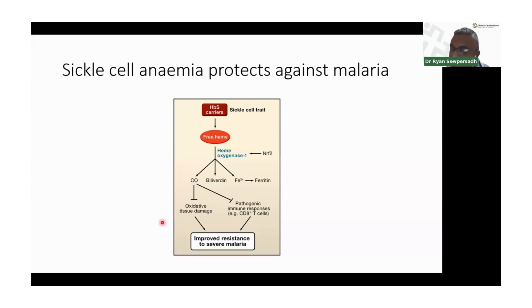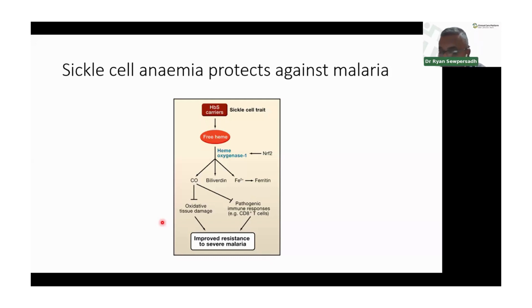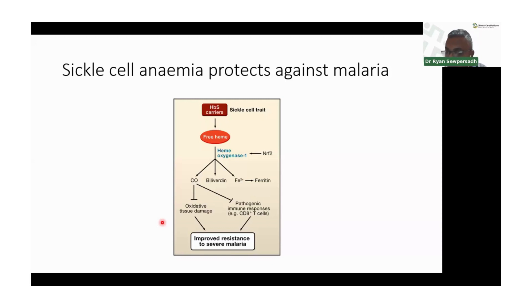In sickle cell anemia, the substitution of glutamine for valine means that the red cell is going to sickle whenever it is exposed to low oxygen tensions. In that way, Plasmodium can actually not infect the red cell.